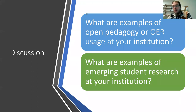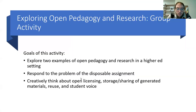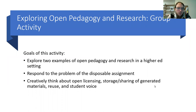Because of our time remaining, we're going to go through our scenarios quickly. The goals of this activity are: to explore two examples of open pedagogy and research in a higher ed setting, to respond to the problem of the disposable assignment, and to creatively think about open licensing, storage, sharing, reuse, and student voice. So we had a couple of scenarios — maybe we'll only do one. Thinking about a disposable assignment and how we could change it to be open: students are asked to conduct research and write a paper on a historical figure selected from a list provided by the instructor. The papers are written, submitted for a grade, and the assignment is complete with no additional use of the papers.